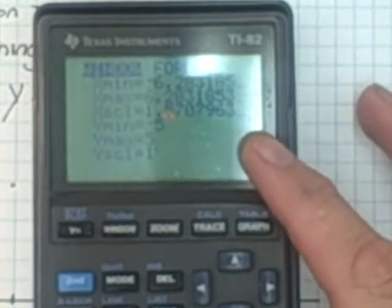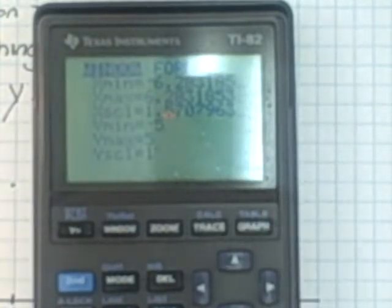The Y maximum and minimum that we're going to use is going to be negative 5 and 5 because we're going to see what happens to the graph as it changes with the value of A. And then the Y scale is still going to be 1. Okay, so there we have our settings in our calculator.